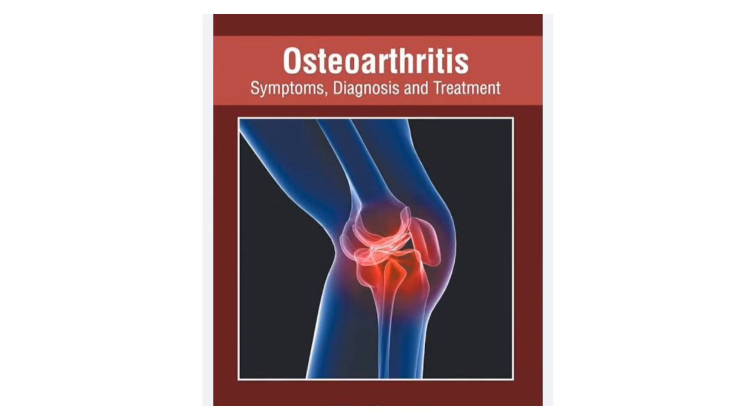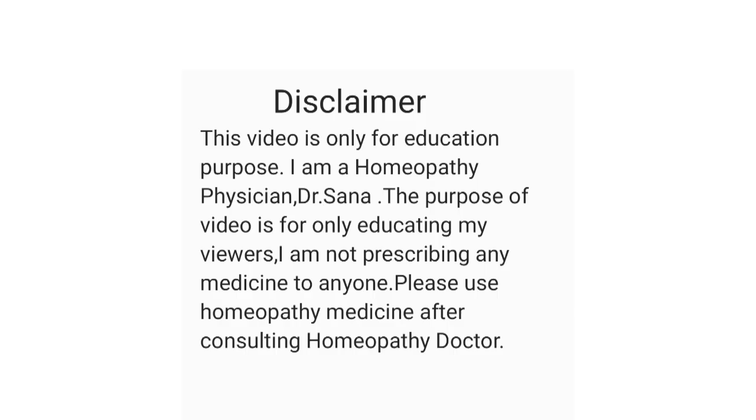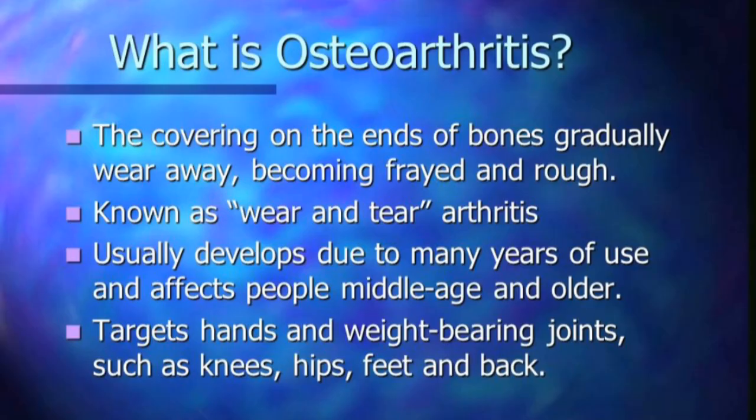Today's topic is osteoarthritis. Osteoarthritis is a type of joint disease that occurs when the cartilage or the cushion between joints wears away over time. Although the condition can damage any joint in the body, the most commonly affected joints are those near the ends of the fingers, knees, hip, low back, neck, and at the base of the thumb.